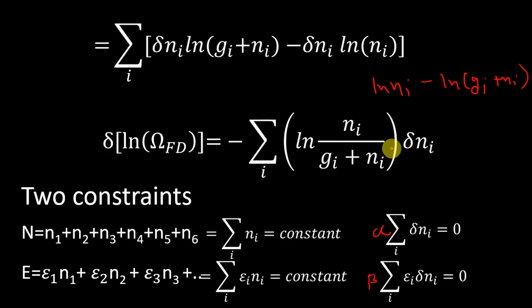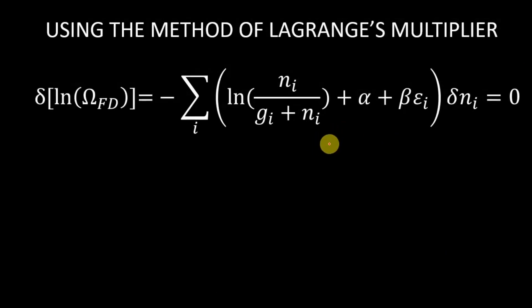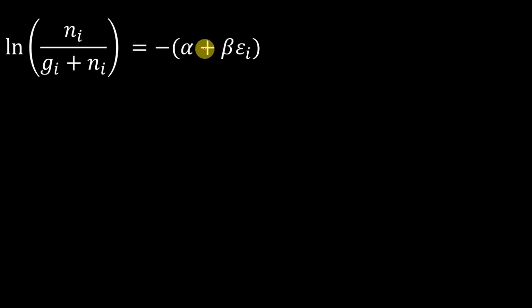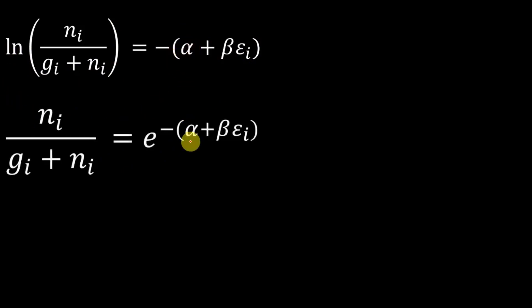Adding these terms gives us alpha times d(n_i) and beta times e_i times d(n_i), which factor out as d(n_i) common. So we have this full expression, and now this is equal to zero. After adding the constraints it equals zero, so if the whole expression is zero, then the term inside must also be zero. We rearrange by taking alpha plus beta*e_i to the other side as a negative, then taking the log to the other side, giving e raised to minus (alpha + beta*e_i).